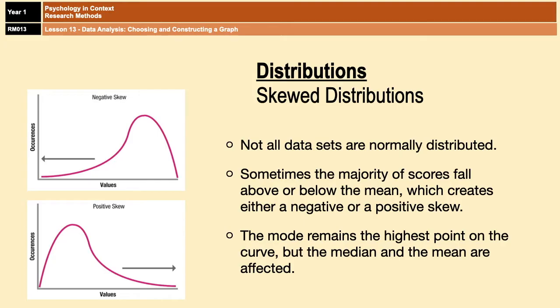In both instances, the mode remains at the highest point on the curve because the mode is not affected by extreme scores. But the mean is dragged to the left or to the right because it is affected by extreme scores.